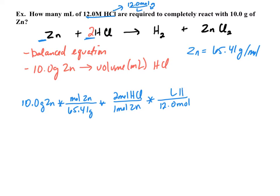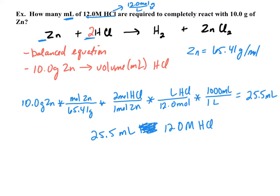This is going to give me the liters of HCl that I need. Now the answer asked for things in milliliters. You can either convert that now or later, but we might as well do that now. For every one liter, there are 1,000 milliliters. When you put that in your calculator, you should get 25.5 milliliters. So there are 25.5 milliliters of 12.0 molar HCl that are needed to react in full with 10 grams of zinc.